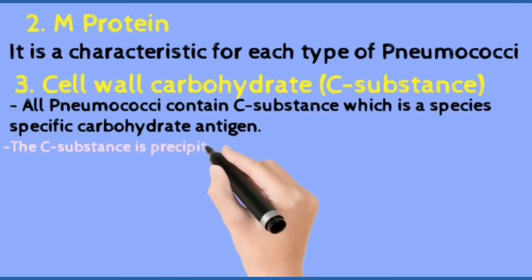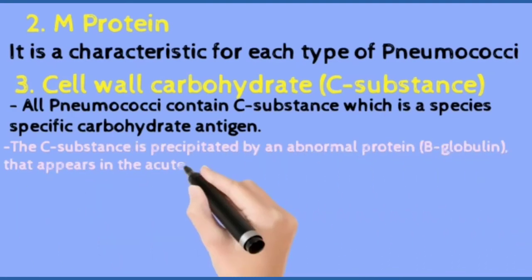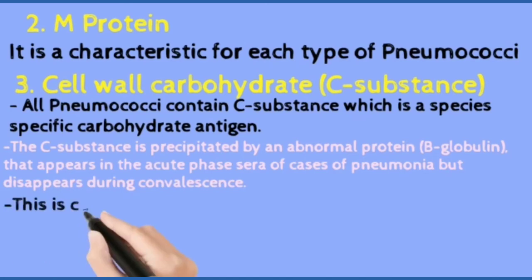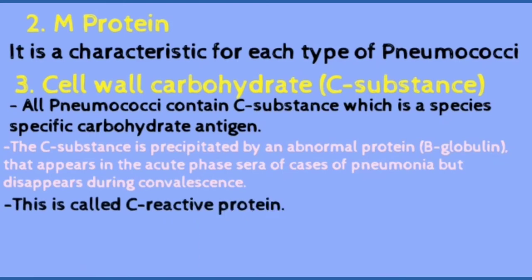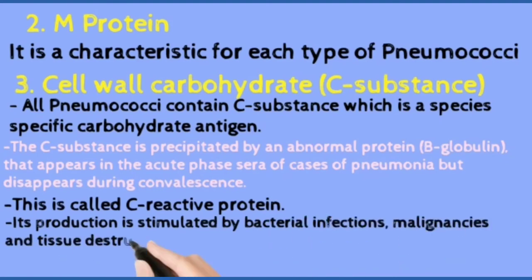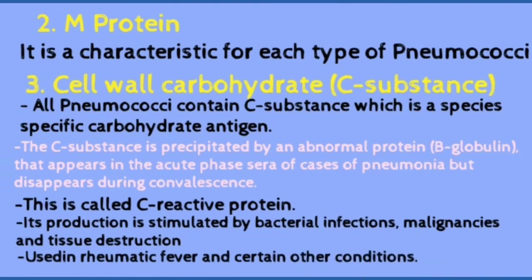This C substance is precipitated by an abnormal beta globulin protein that appears in acute phase of pneumonia cases but disappears during convalescence. This is called C-reactive protein. Its production is stimulated by bacterial infections, malignancies, or tissue destruction. It is used in diagnosing rheumatic fever and other conditions.